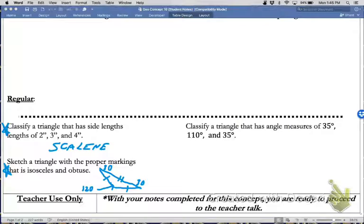And finally, classify a triangle that has angle measures of 35, 110, and 35. Well, guess what? It's what we just drew. It has two angles that are the same. So we could say that it is isosceles. And because it has one angle bigger than 90, we could also state that it is obtuse.